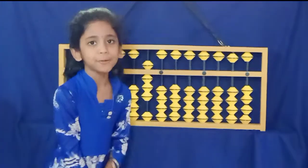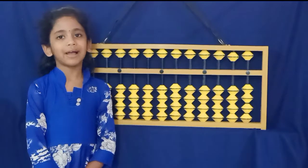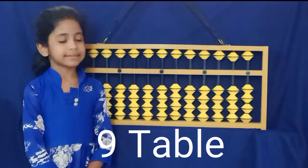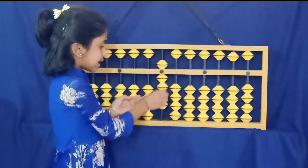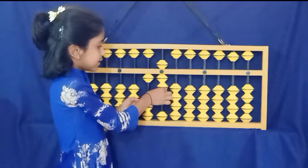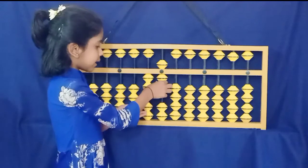Thank you. Now I am doing 9 tables. 9-1s are 9, 9-2s are 18, 9-3s are 27, 9-4s are 36.